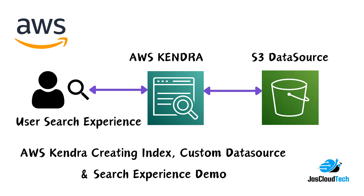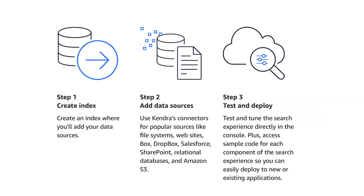AWS Kendra has large language models that help us create secure, generative AI-powered conversational experiences. There are also multiple use cases. The basic flow is: first we create an index where we add our data sources, then using connectors we can connect file systems, websites to crawl, Dropbox, Salesforce, SharePoint, relational databases, as well as Amazon S3 buckets — I'll be using the S3 bucket option.